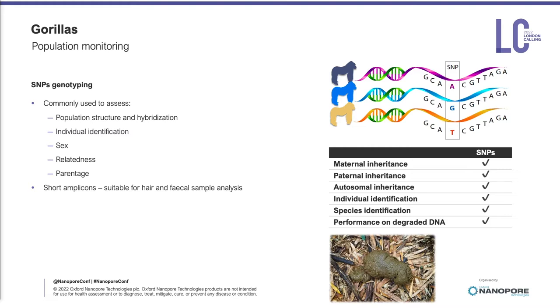In addition, being single-base changes in our genome, SNPs require short fragments of DNA in order to be analyzed and amplified. This is particularly good when we are relying on non-invasive samples such as hair and feces, which contain either low amounts or highly degraded DNA — to lower the disturbance to the animals and to reduce the risk of spreading infectious diseases that have been wiping out entire families of eastern lowland gorillas in recent years.